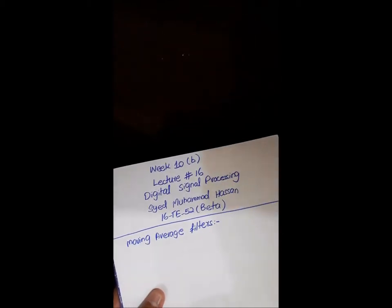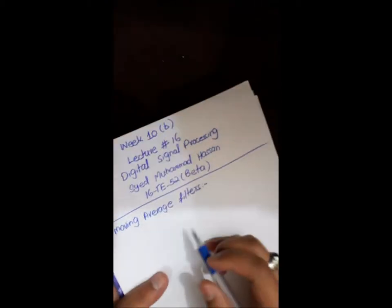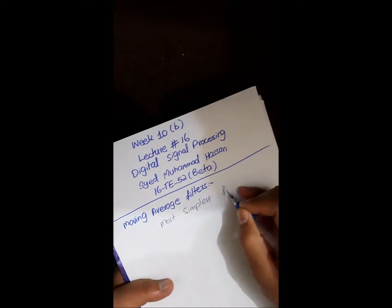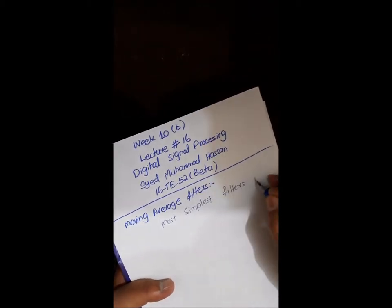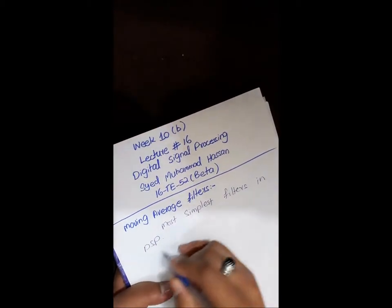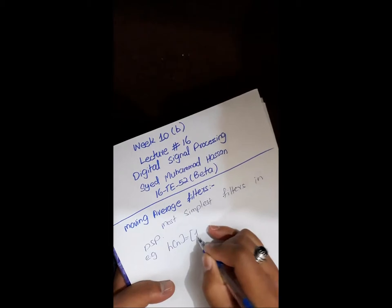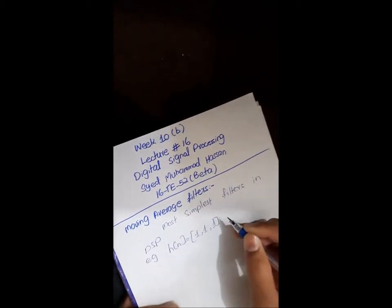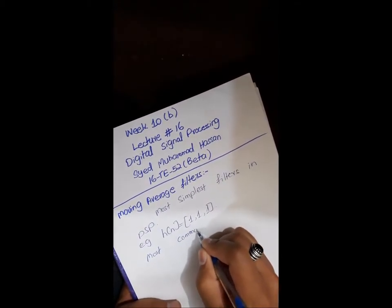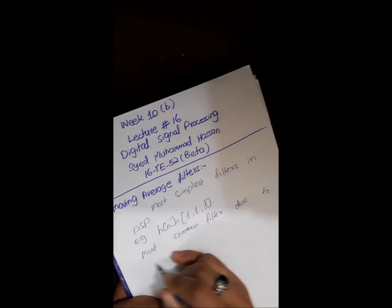Today we will learn about moving average filters. So what are moving average filters? These filters are the most simplest filters in DSP. For example, we take a signal 1, 1, 1.